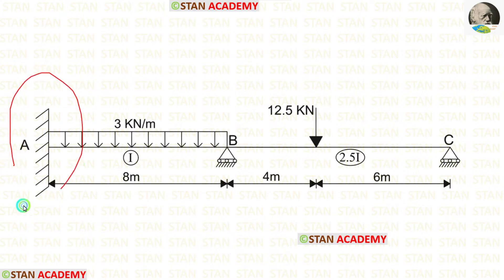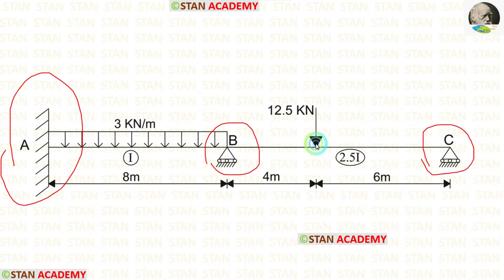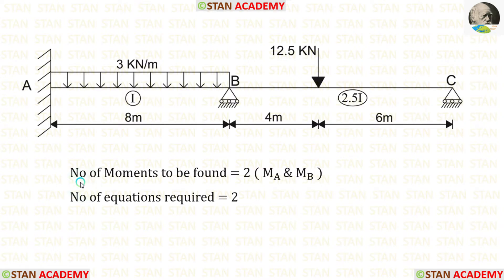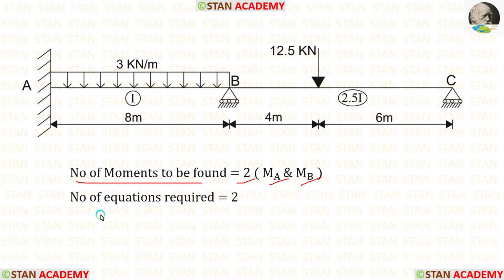At point A, there is a fixed support. At points B and C, there are roller supports. In this beam, the number of moments to be found is 2: MA and MB. To find these two moments, we need two equations.